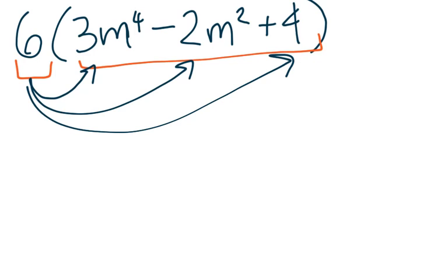So this is going to give me 6 times 3m to the fourth. I multiply the constants together, so 6 times 3 is 18 to the fourth.